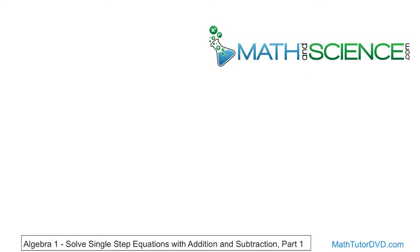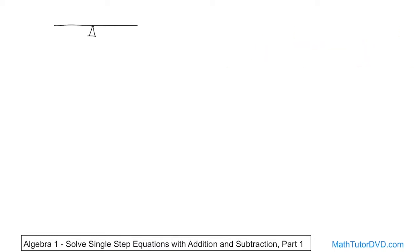All equations are like a seesaw — that thing at the playground with a piece of wood and a balance point in the center. What you end up having is one person on this side of the seesaw and another person on the other side.